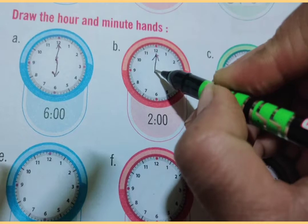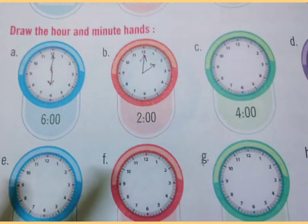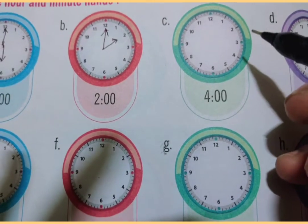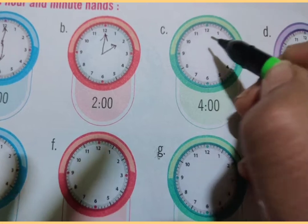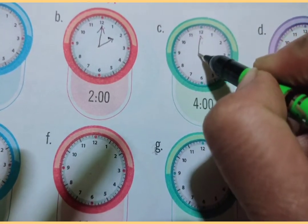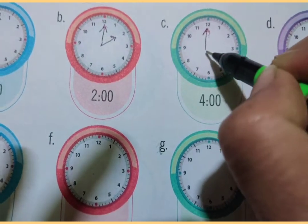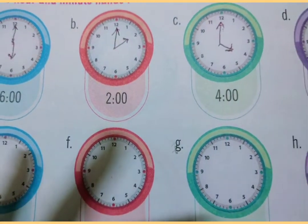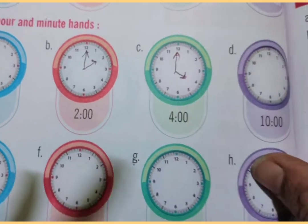The minute hand is at 12 and the hour hand is at 2. Now the next part C: the time given is four o'clock. Draw the minute hand at 12 and the hour hand at 4. So the time is four o'clock.